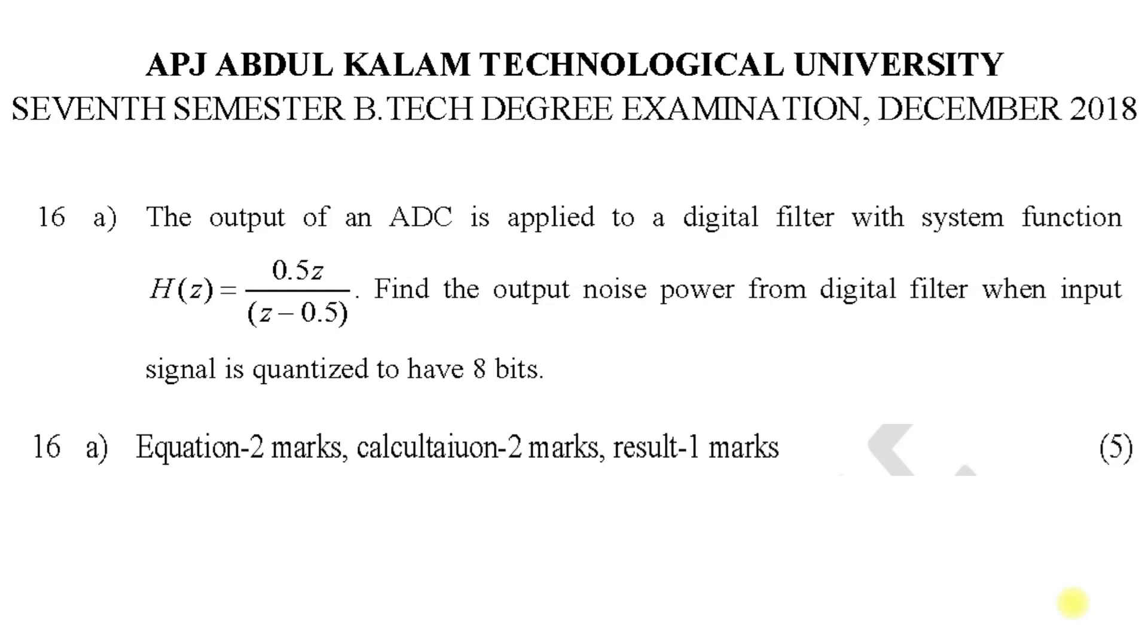The output of an ADC is applied to a digital filter with a system function H(z) equal to 0.5z divided by z minus 0.5.